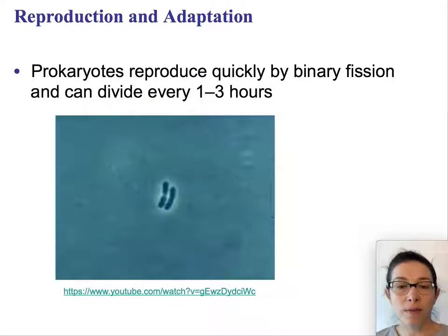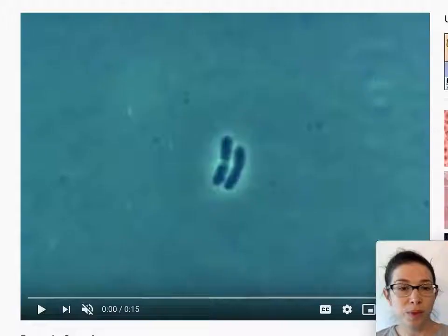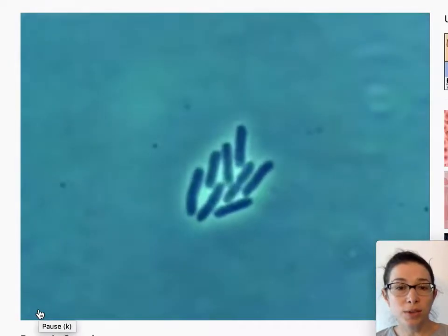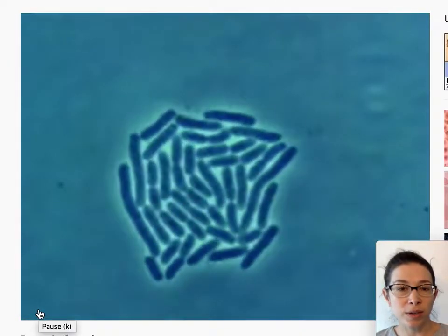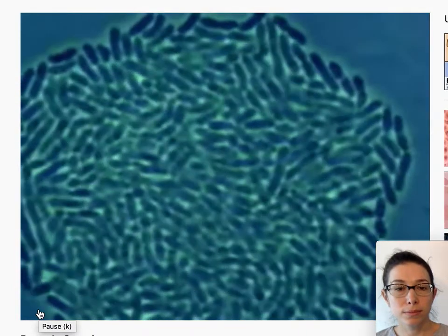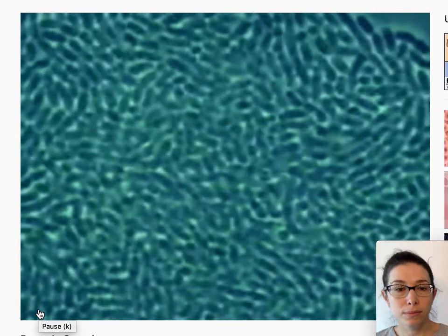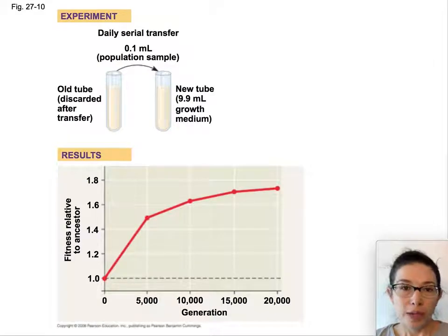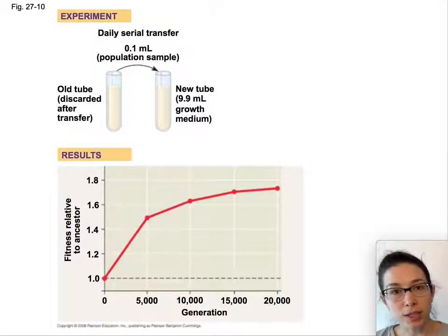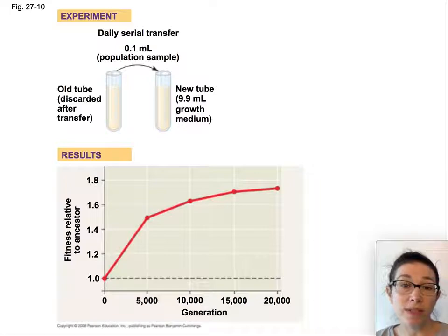Let's watch the video of bacteria dividing — this is probably E. coli. They don't timestamp the video, but every 20 or 30 minutes one of these bacteria is dividing. Because bacteria have this very rapid doubling time, they will divide every 20 minutes if all conditions are ideal. They divide a little bit slower if conditions are not ideal, for example if the temperature is too cold.